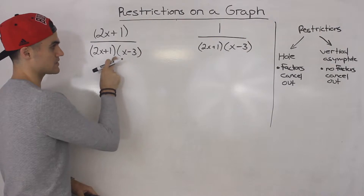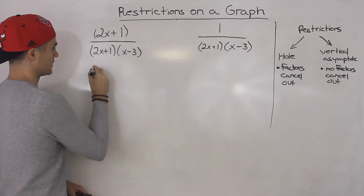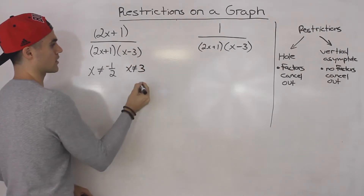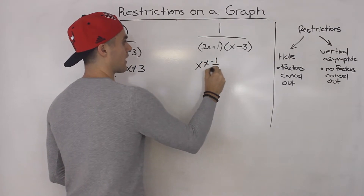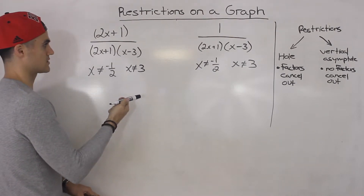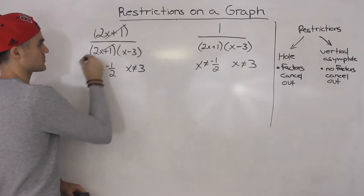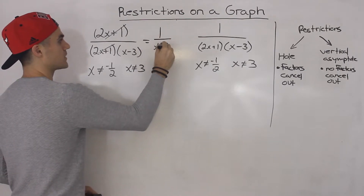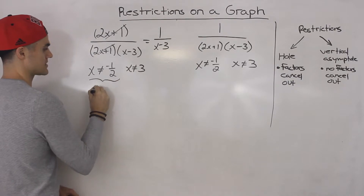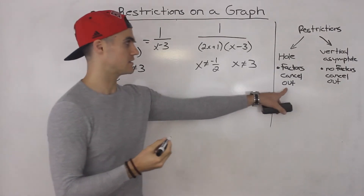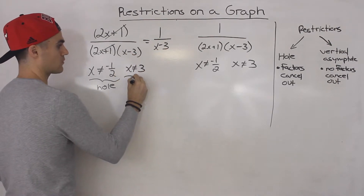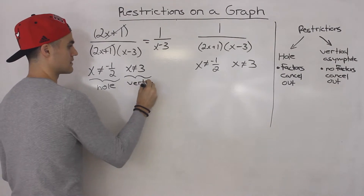So after factoring, notice the restrictions for both of these are the same: x cannot equal negative one half, and x cannot equal 3. But the type of restriction is going to be different. In the first expression, the 2x plus 1's cancel out, so we're just left with 1 over x minus 3. Because the 2x plus 1's canceled out, we know that restriction is a hole. And because the x minus 3 didn't cancel out — it's still there — we know that restriction is a vertical asymptote.